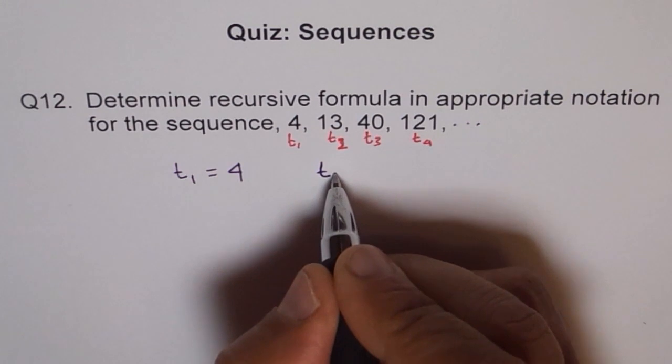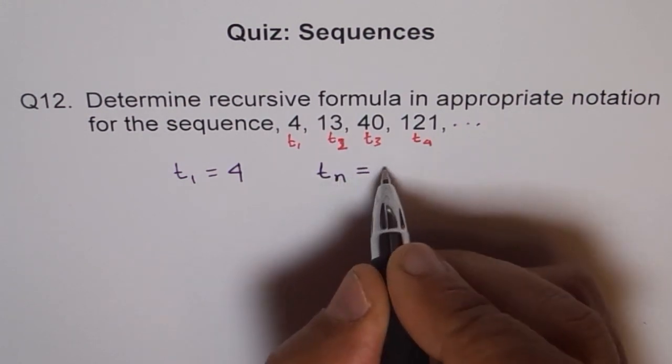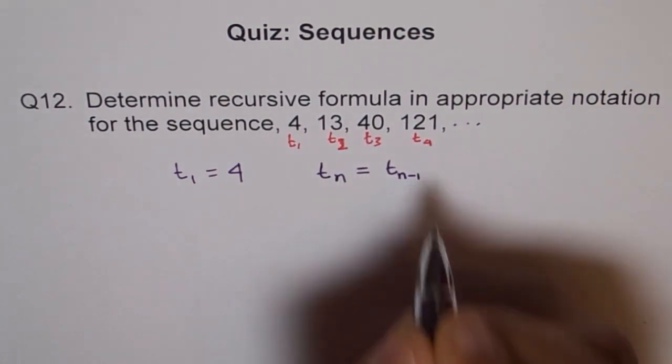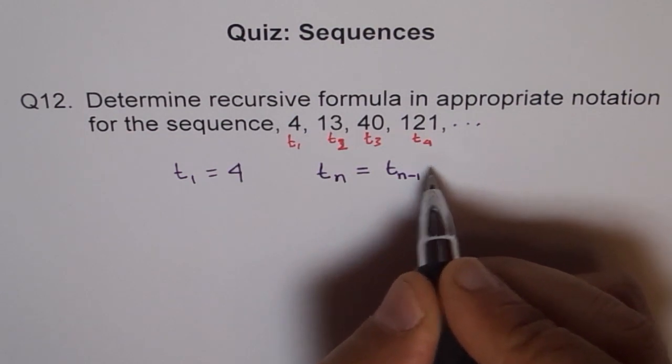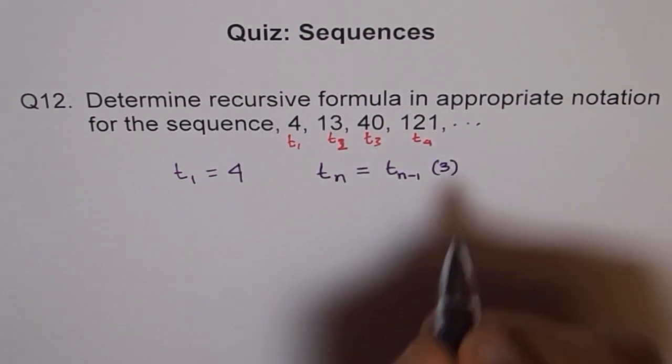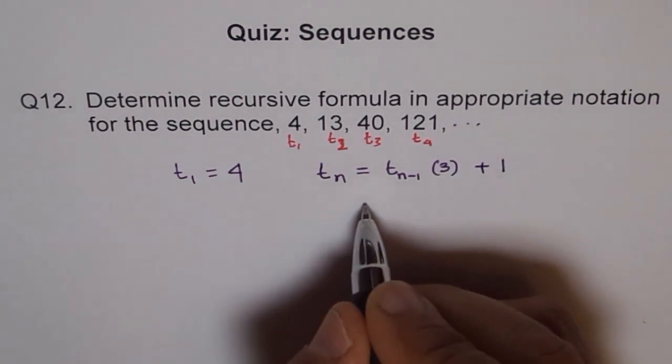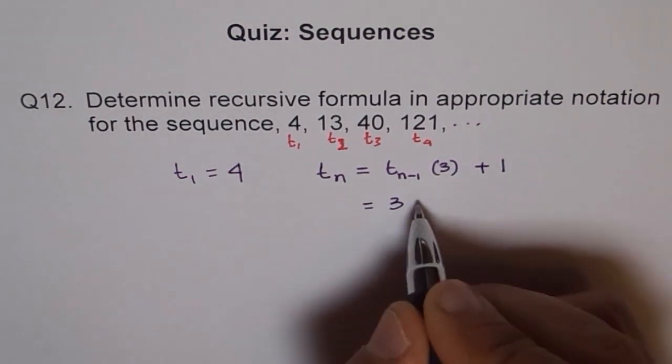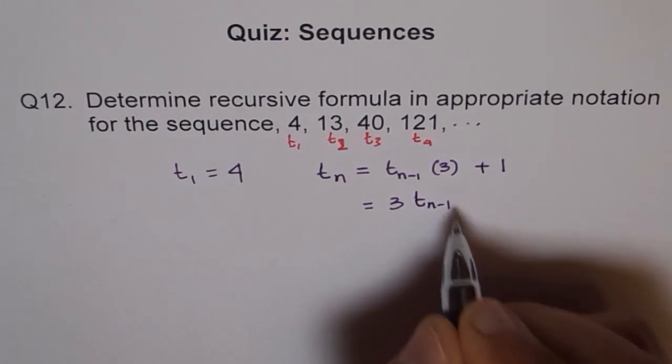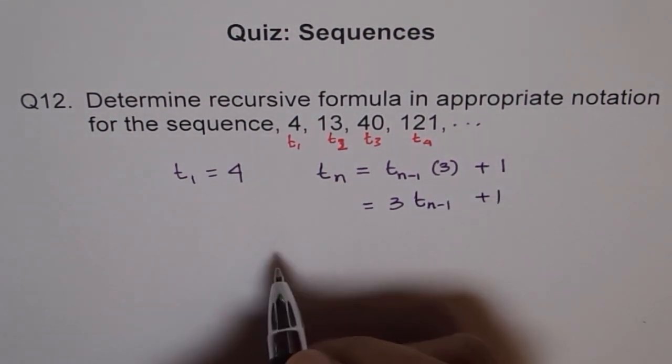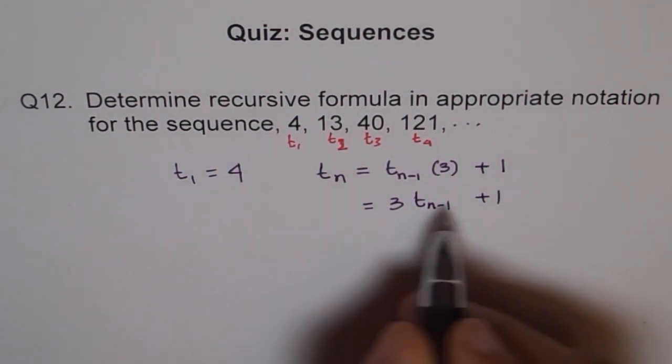So we can write general term N is previous term, which is N minus 1 times 3. So 4 times 3 is 12 plus 1. So we can write this as 3 times TN minus 1 plus 1. So we get our general formula.